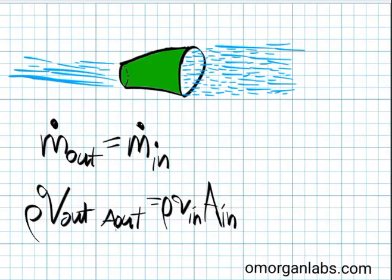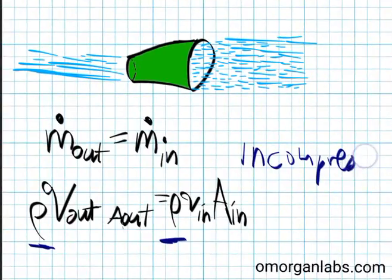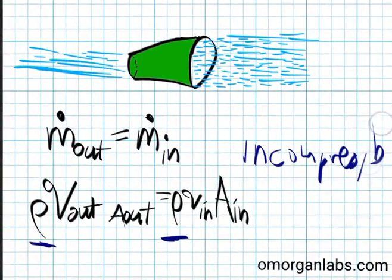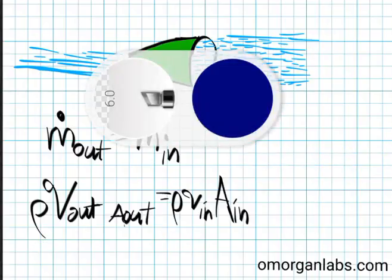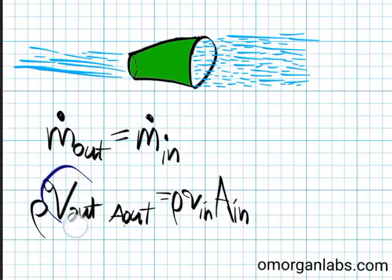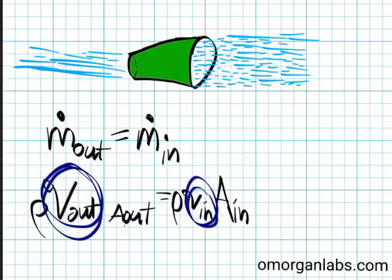So here we have a scenario where we have a small outlet, big inlet. Your mass flow in equals mass flow out. But let's look at these individual components. Your density is going to be the same because if we're talking about water and incompressible fluids, incompressible, that means that your velocity isn't changing. So in order to compensate, your velocity out is going to be larger than your velocity in. And it's compensating for the differences in area. This is like a classic nozzle.